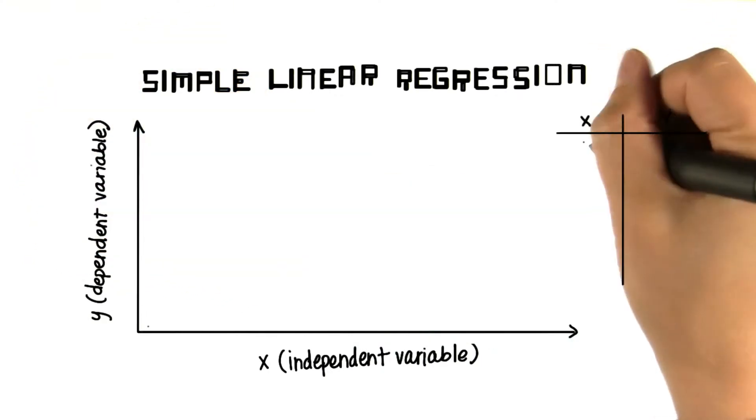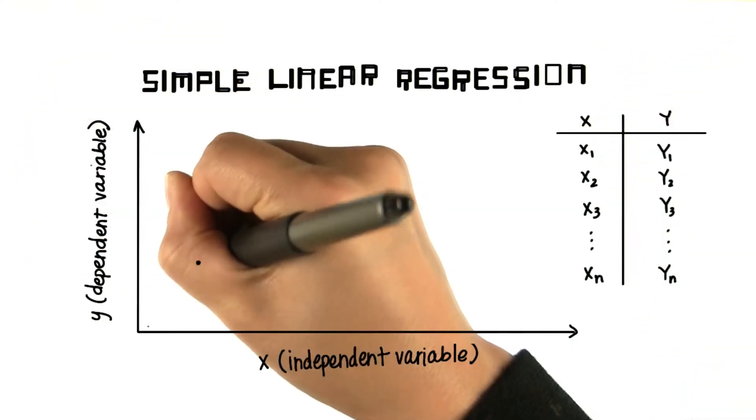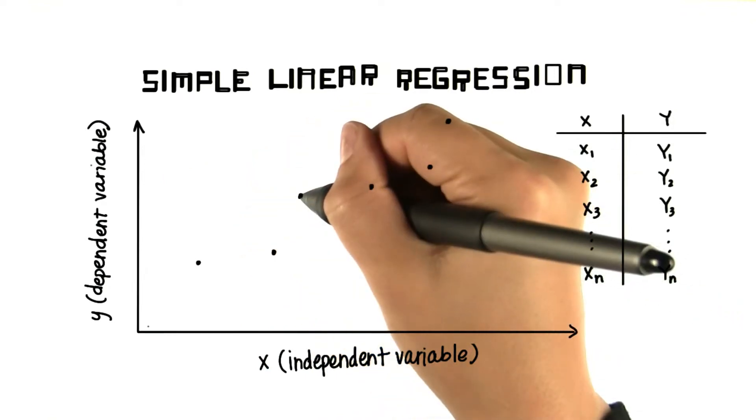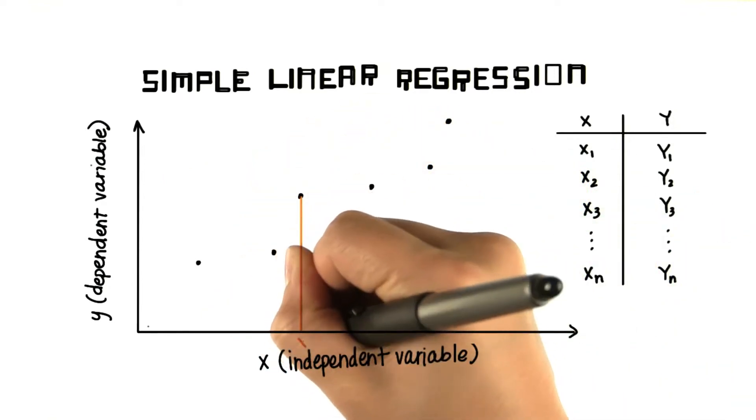We have data values for x and y, which we can plot in a scatter plot. For each point, these x and y values are our observed values.